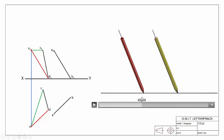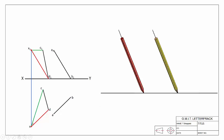The two pencils appear parallel, and we have an edge view of the plane containing both of them. In our 2D drawing, we're going to look along our level line. There's our auxiliary X1Y1 line, drawn perpendicular to our level line. We're going to project up each of our skew lines.